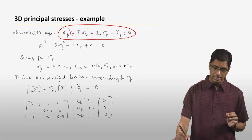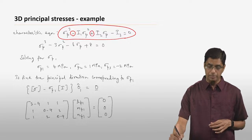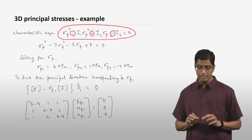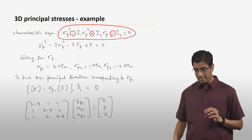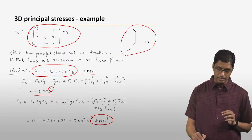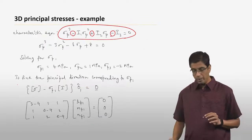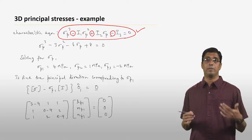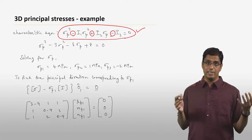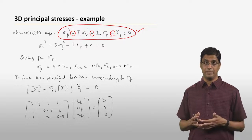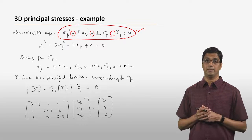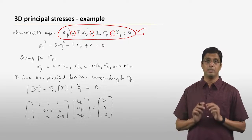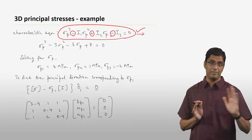I want you to note something about the characteristic equation: i1 has a negative term in front of it, i2 has a positive term, and i3 has a negative term. So you have to use the characteristic equation with the right signs for i1, i2, and i3. These expressions are valid only for this specific characteristic equation. If you have a characteristic equation where it's sigma_p cubed plus i1 sigma_p squared plus i2 sigma_p plus i3 equals zero, then the expressions for i1 and i2 would have to be multiplied by a negative sign. That's something you must keep in mind.